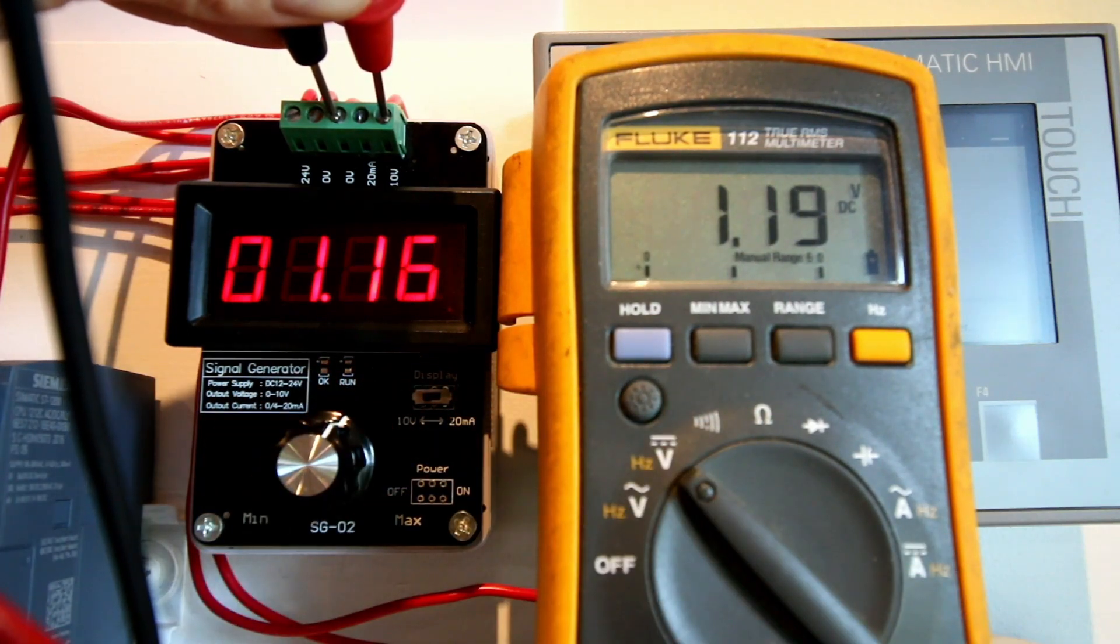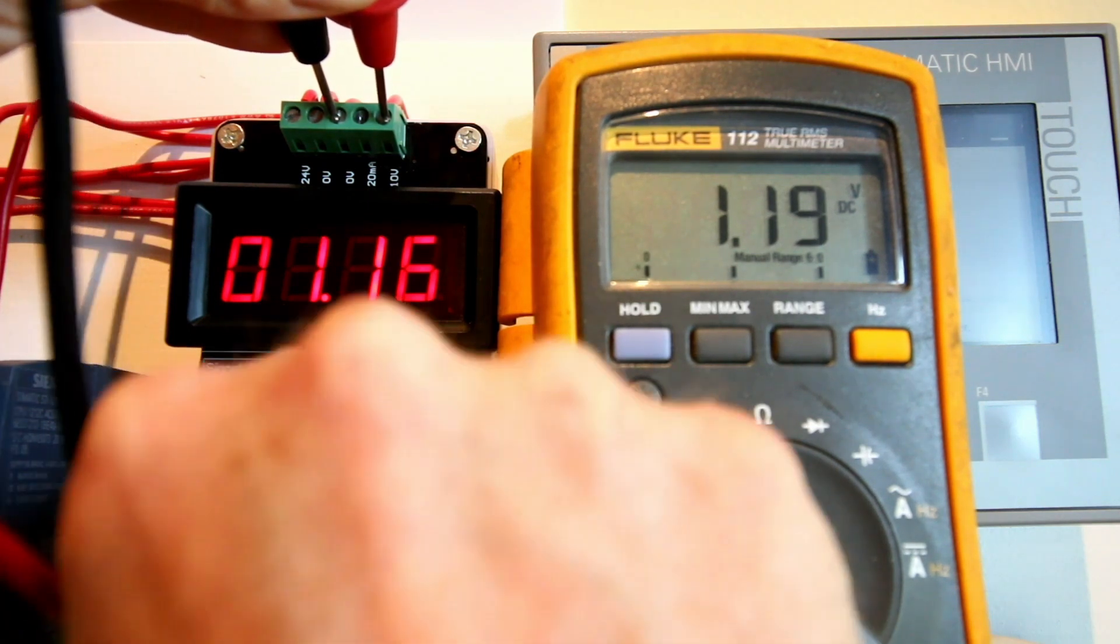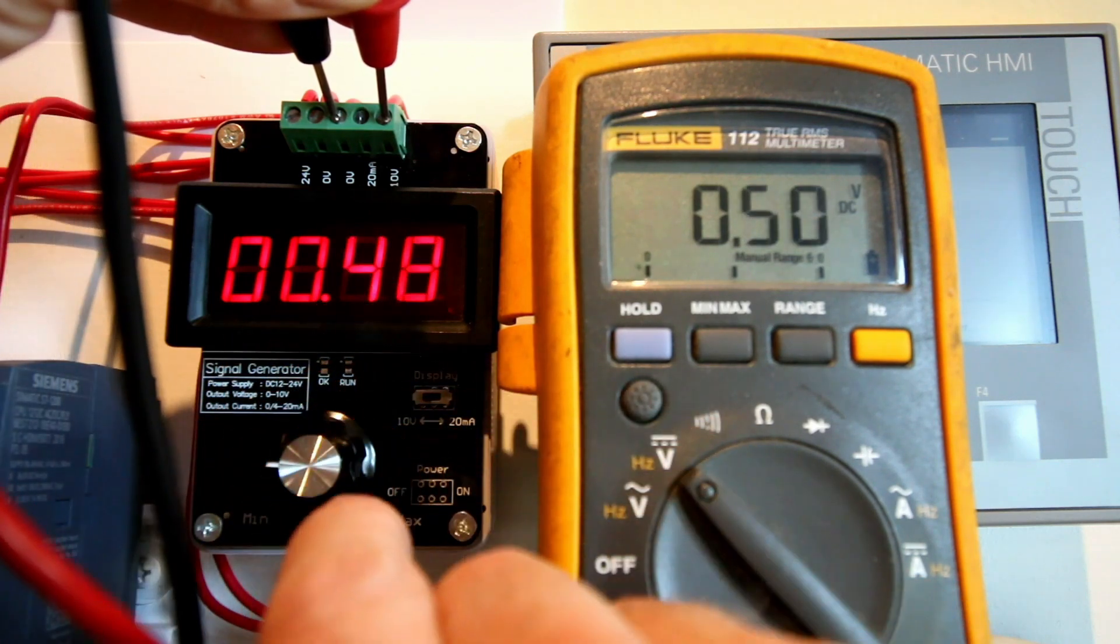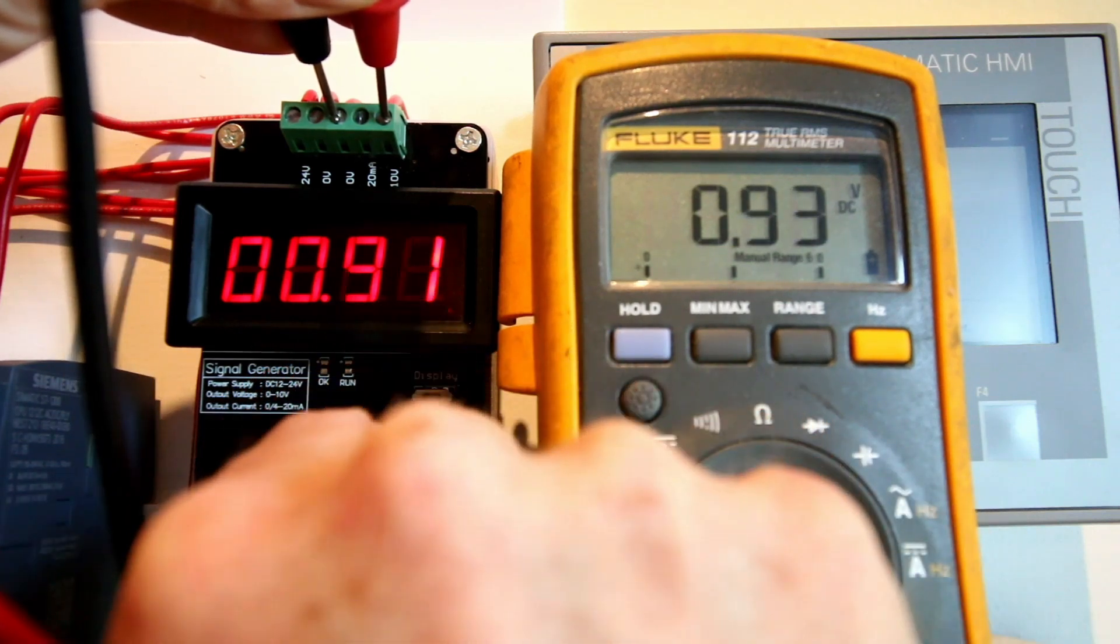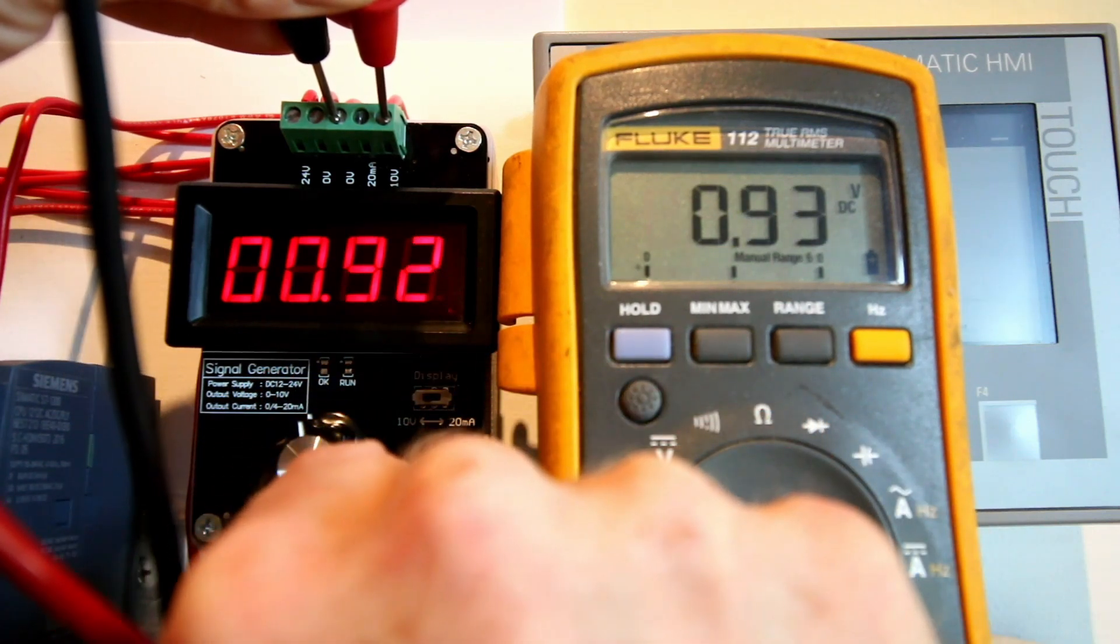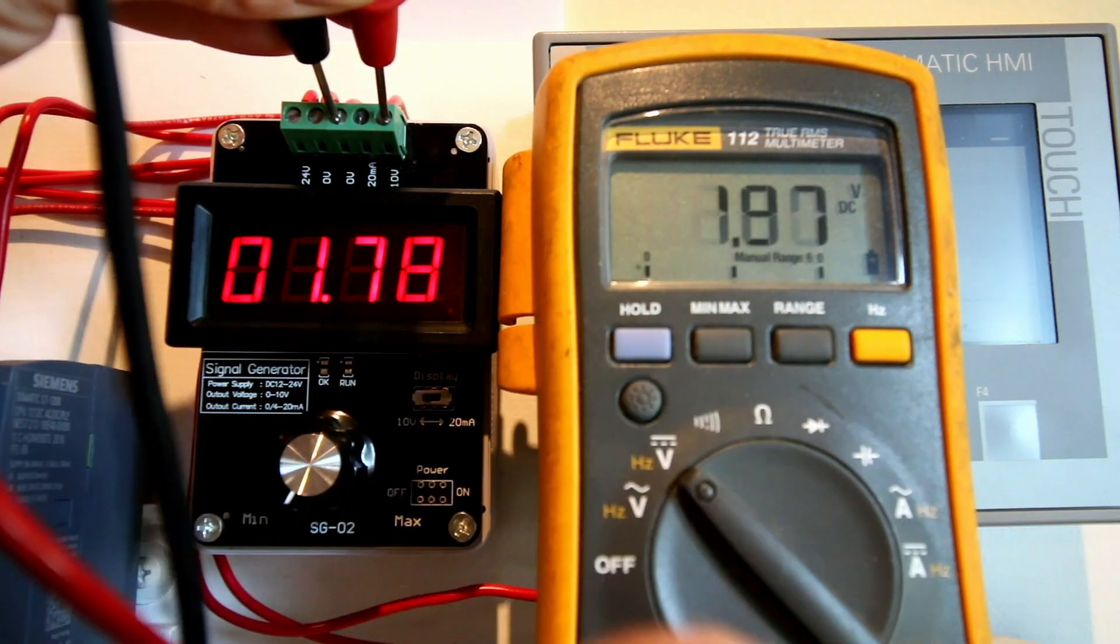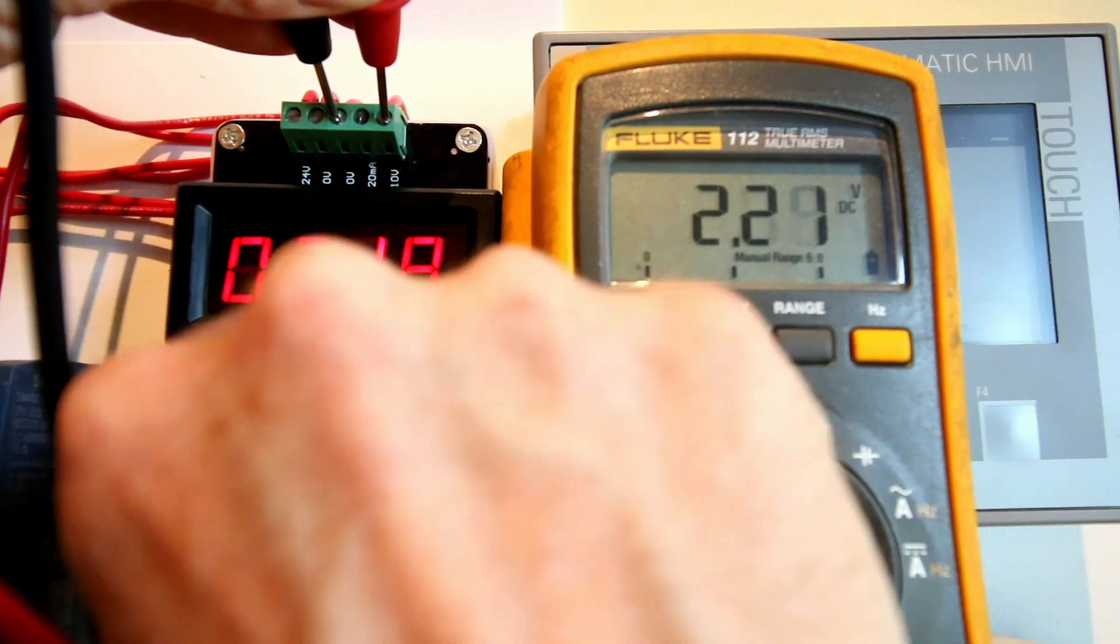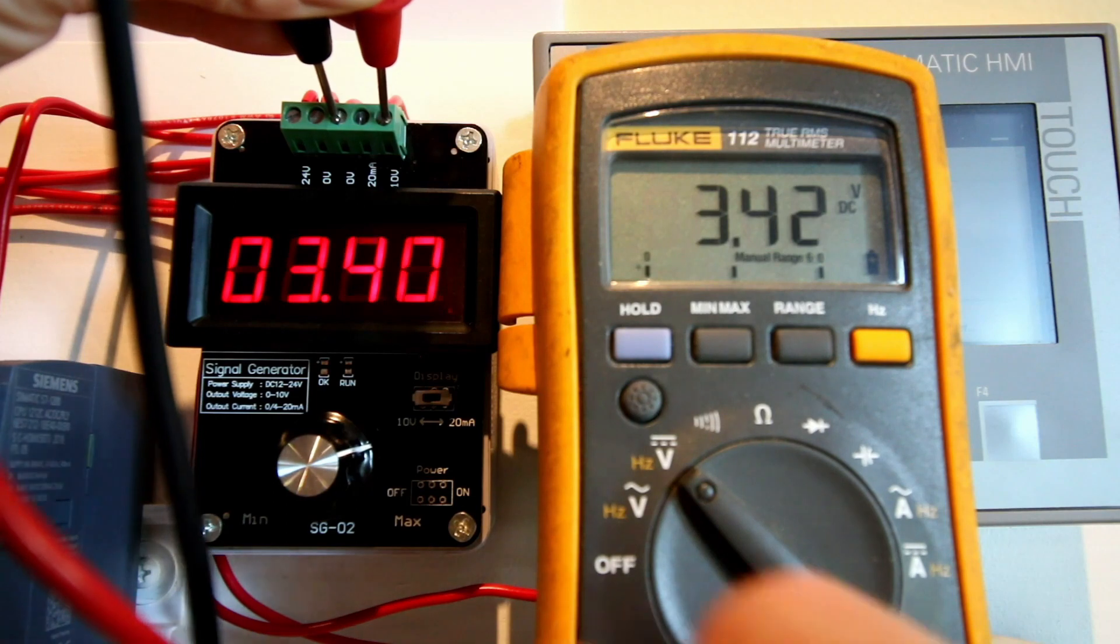So we got 1.16 and on the meter I am reading 1.19. We got 0.48 and 0.5 on the multimeter. 0.92 and 0.93. So it is deadly accurate, right? Let's wrap it up as we go. So we got 2.18, 2.2 on the meter. 3.4. Let's just wait until it settles down. 3.39 and 3.40 on the meter.